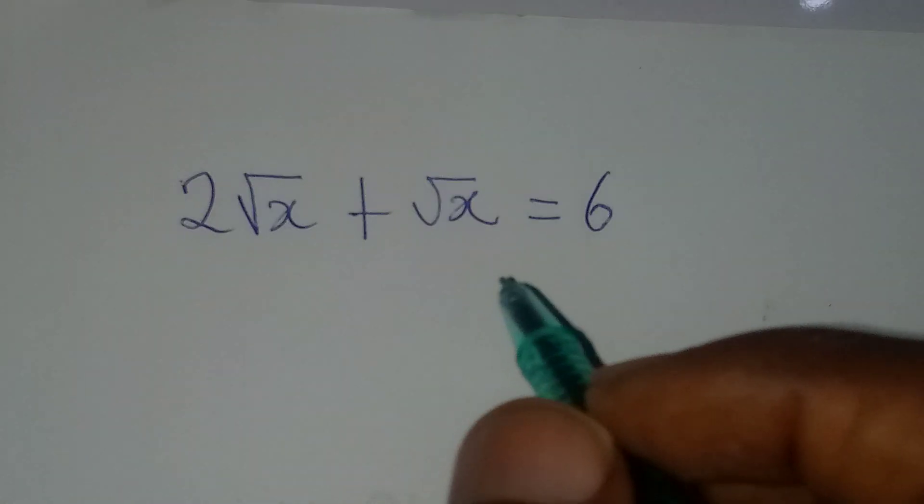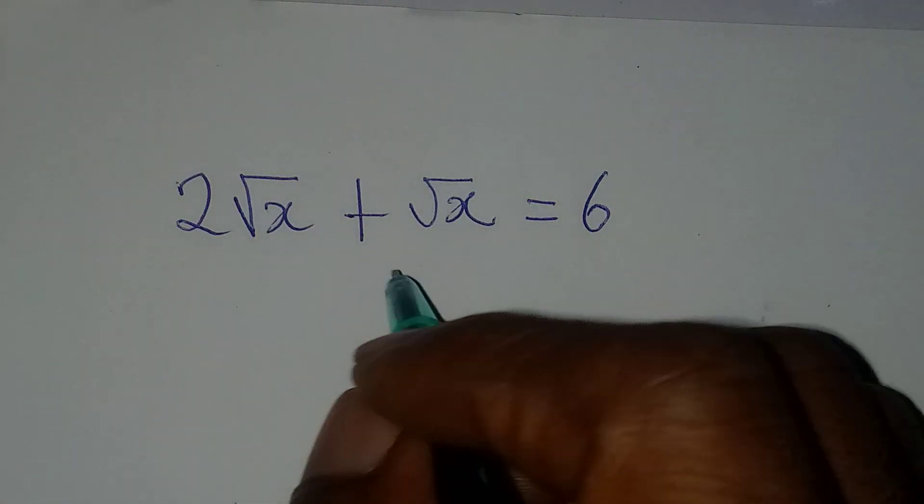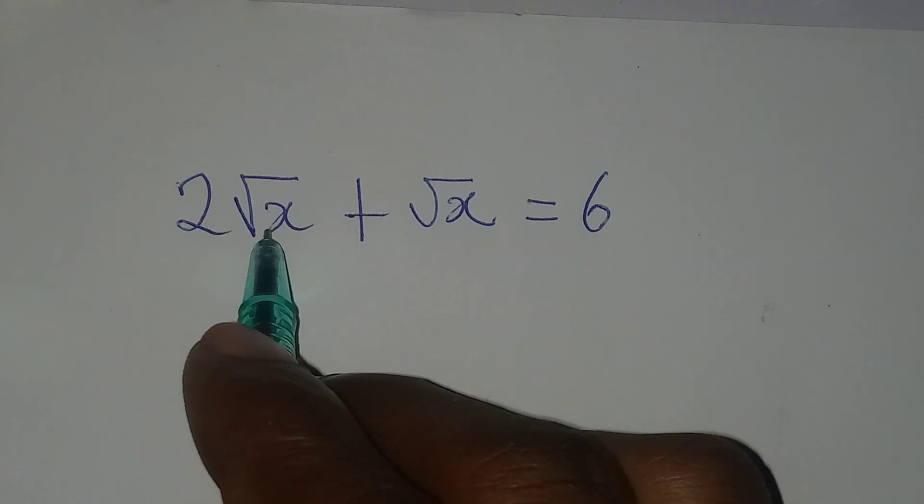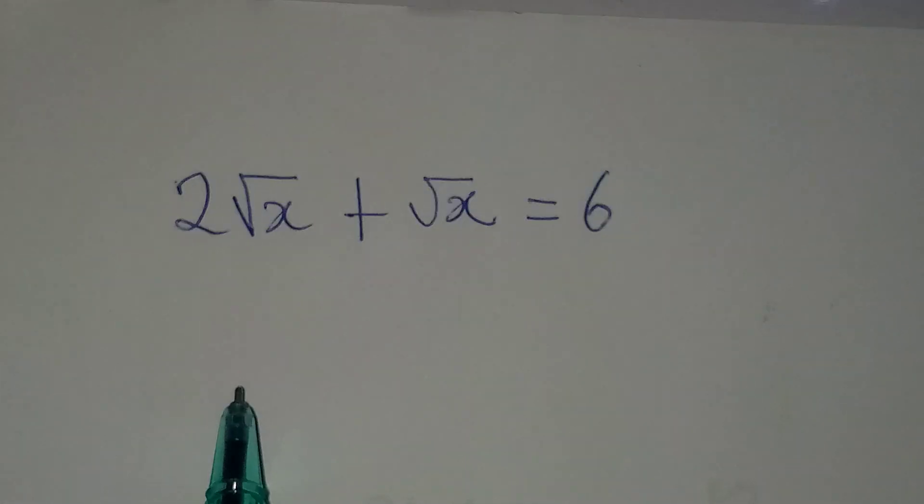Hello everyone. Let's solve this very quickly. We have 2√x + √x = 6.